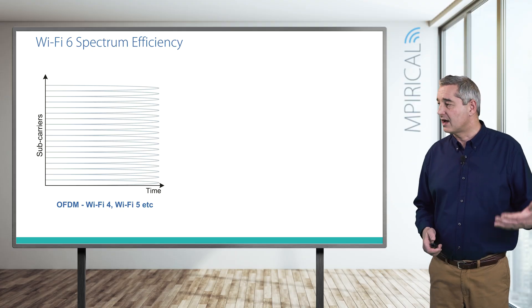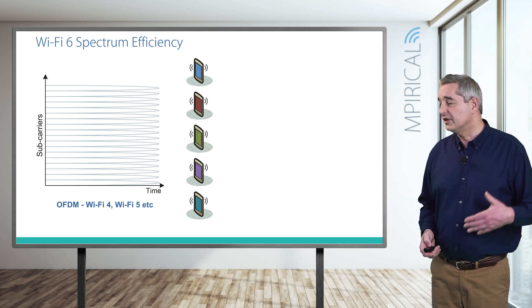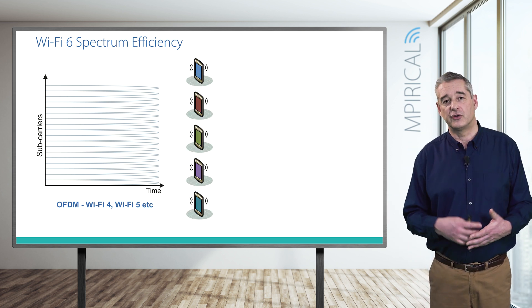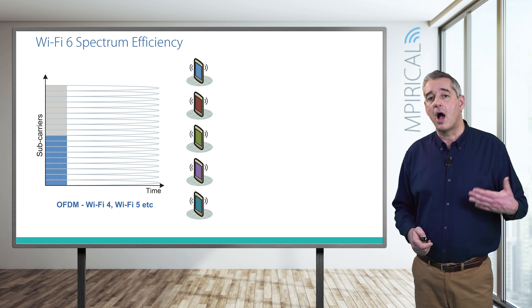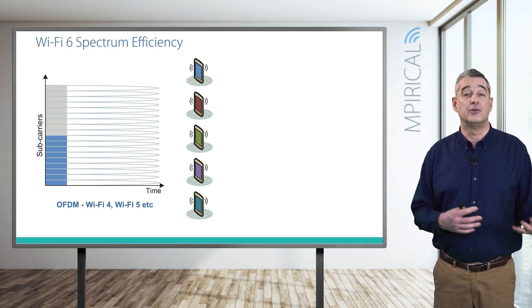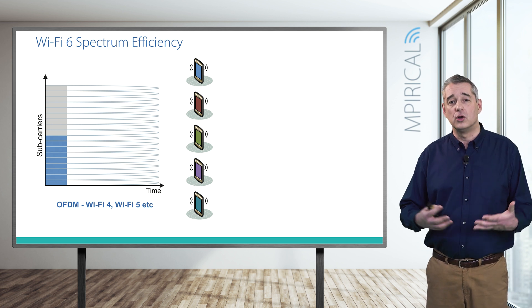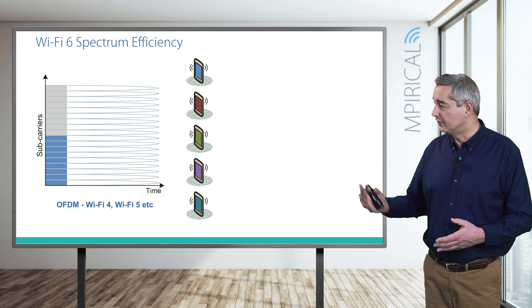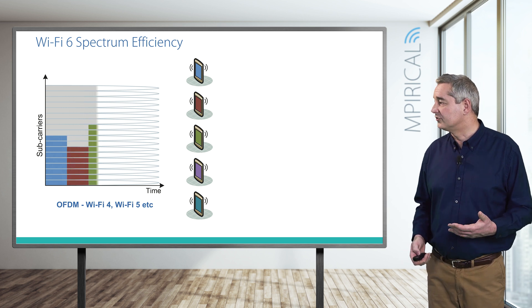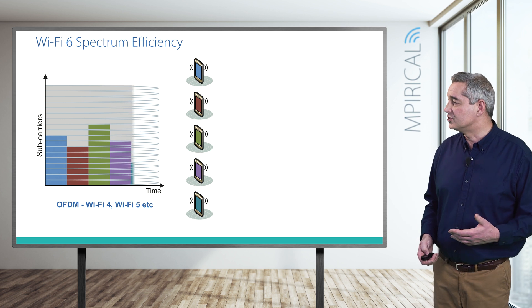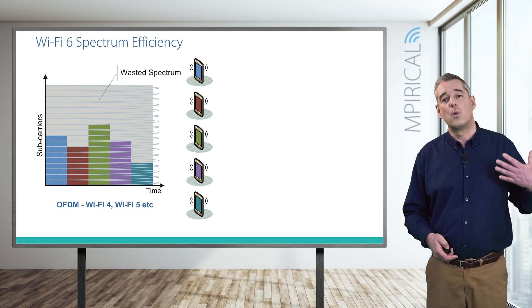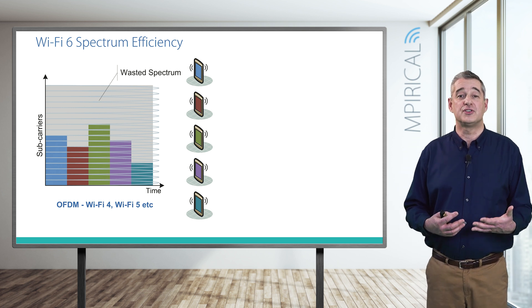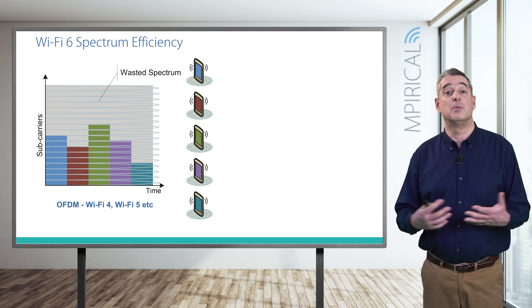On the diagram we can see our available sub-carriers, and we have potentially five different stations all wishing to send or receive data across the Wi-Fi network. However, with OFDM only one station is able to transmit or receive at any particular time — we allocate all of the resources to that given station. So here we see the blue station, followed by the green station, the purple station, and finally the blue station again. The key thing to point out here is the wasted spectrum: if a station doesn't wish to send data to occupy the entire capability of the access point, that resource can't be given to anybody else.